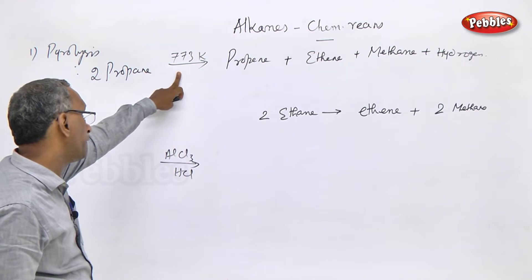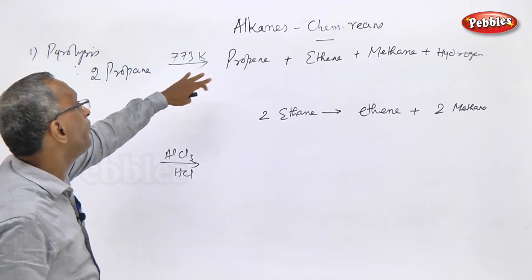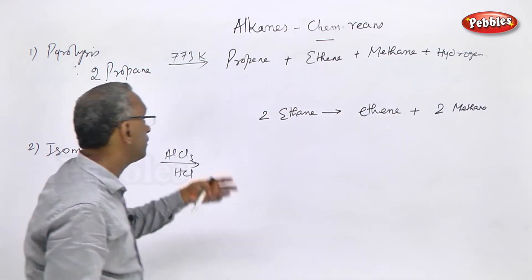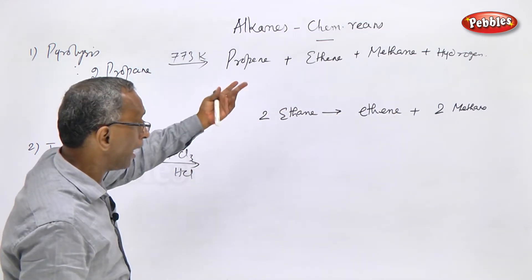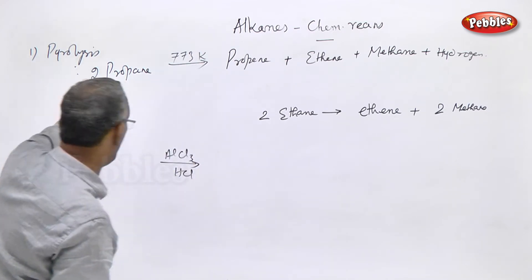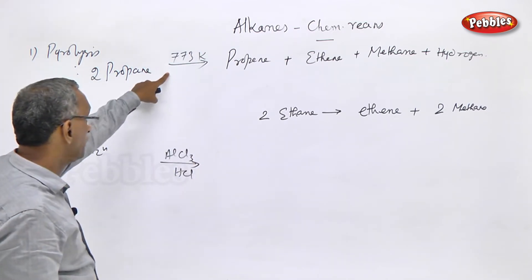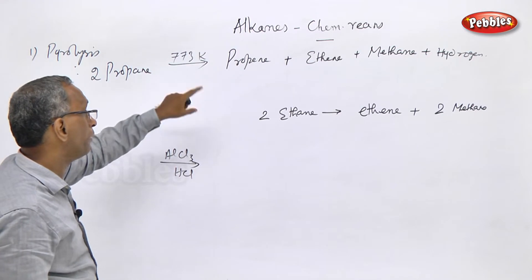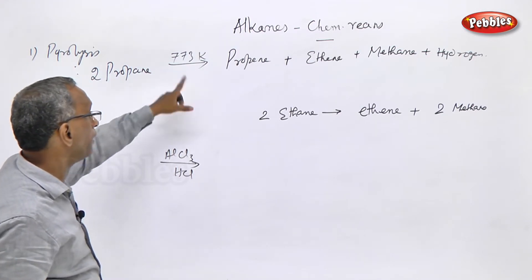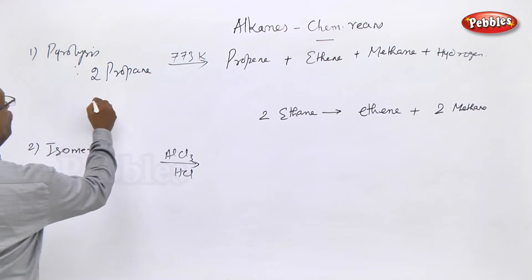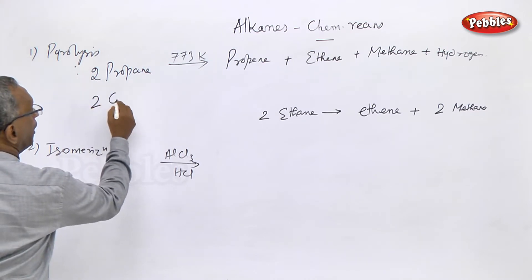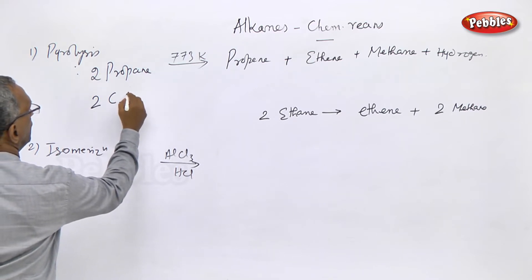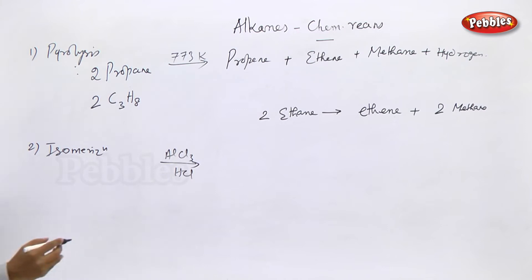For example, in the presence of nickel catalyst, catalytic pyrolysis at high temperature of 500 degree centigrade or 773 Kelvin, propane has the formula C3H8. Using the alkane formula CnH2n+2, two moles of propane undergo pyrolysis.